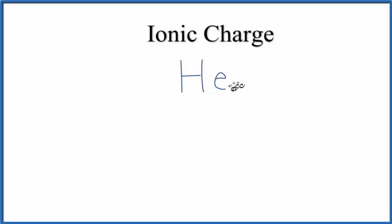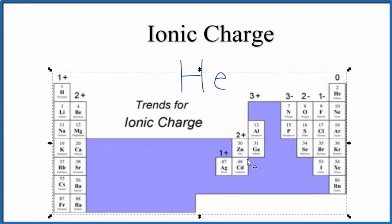To find the ionic charge for helium, there's two ways we can do this. We can look at the periodic table and the trend for ionic charge, or we can look at electron configurations. Let's start with the periodic table. That's usually a pretty easy way to do this.